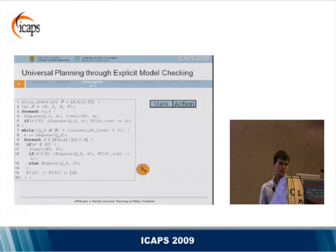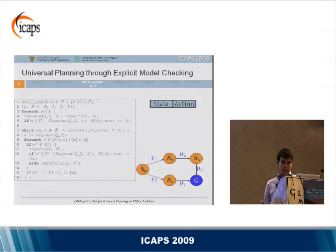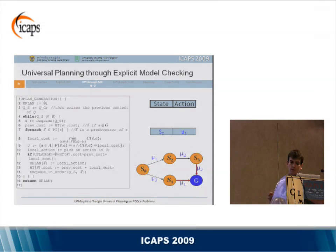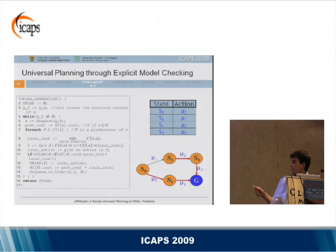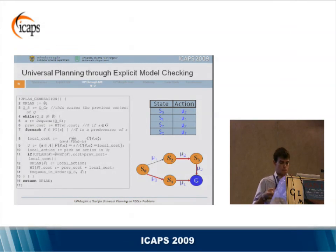We have a two-phase algorithm. In the first phase we build the transition graph of the system and compute the set of reachable states. Then in the second phase, starting from the goal we go backward and collect all the shortest paths from all reachable states to the goal. In this way we obtain a table containing state-action pairs that represents our universal plan.